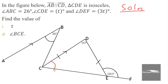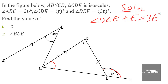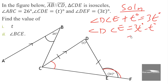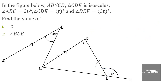To find angle DCE, we use the fact that angle DCE plus t degrees must equal the exterior angle, which is 3t degrees. So angle DCE equals 3t minus t, which is 2t degrees. Since triangle CDE is isosceles, this angle is also 2t degrees on the other side.